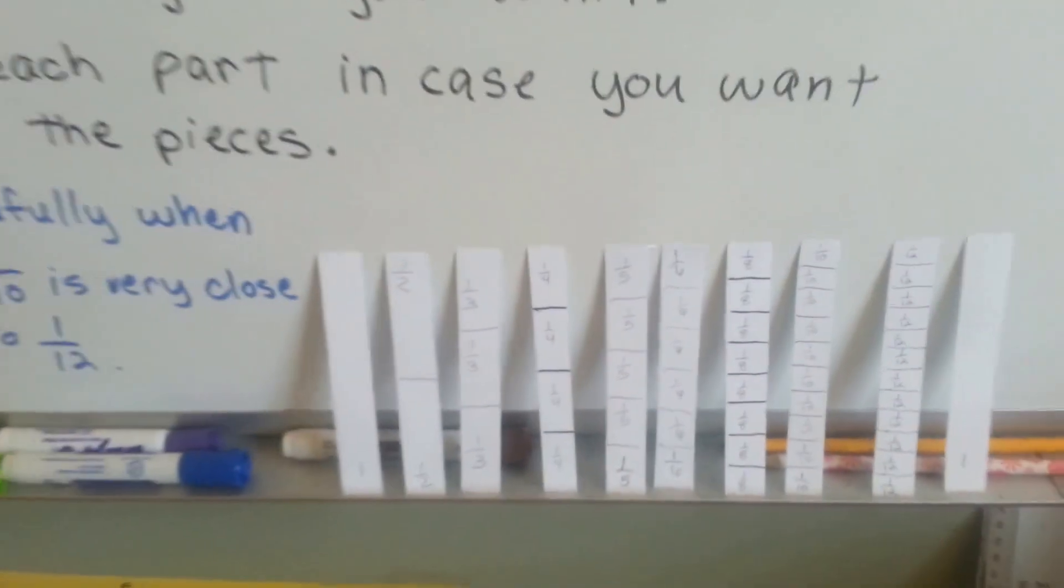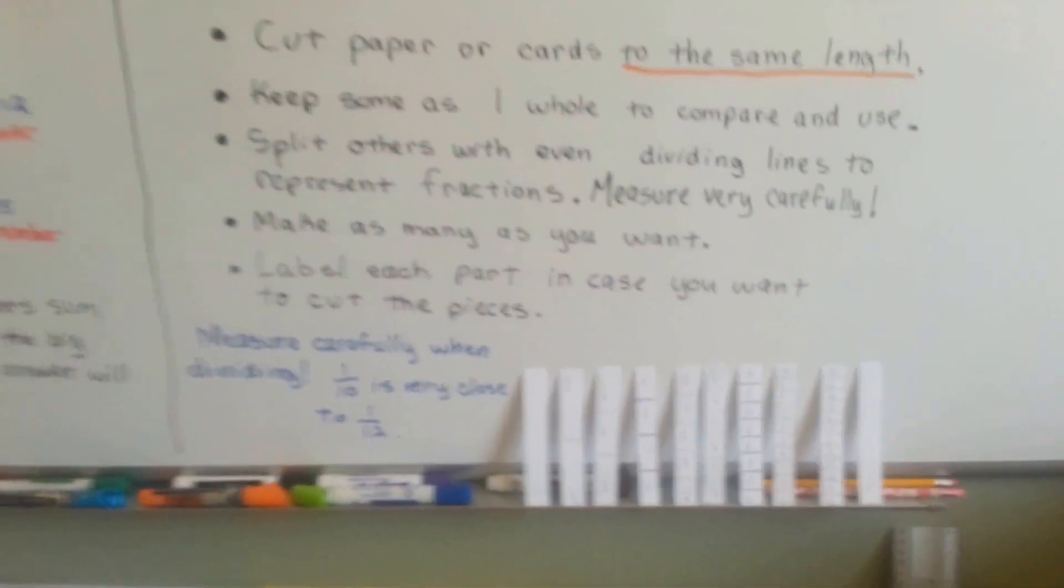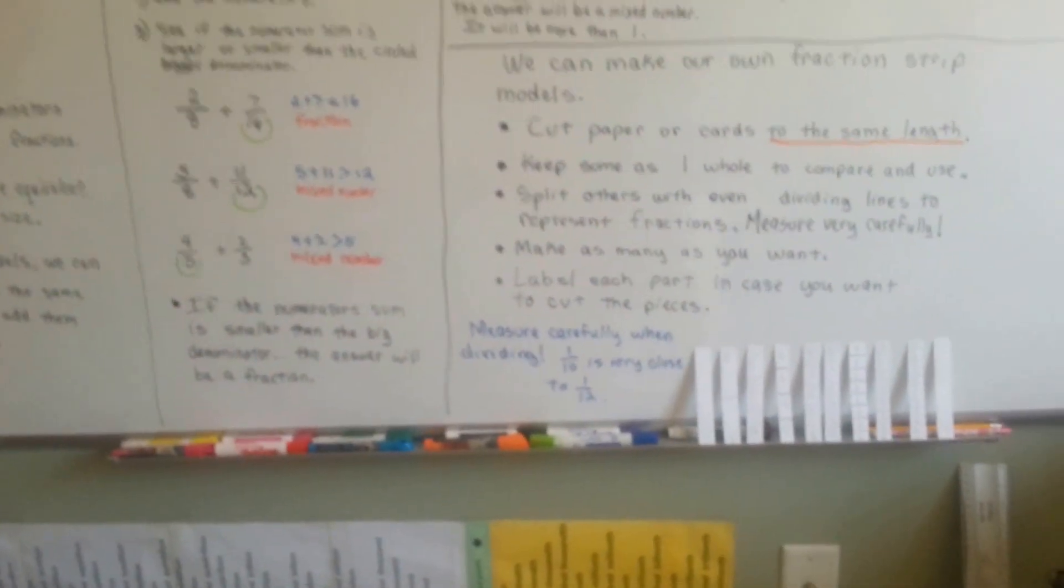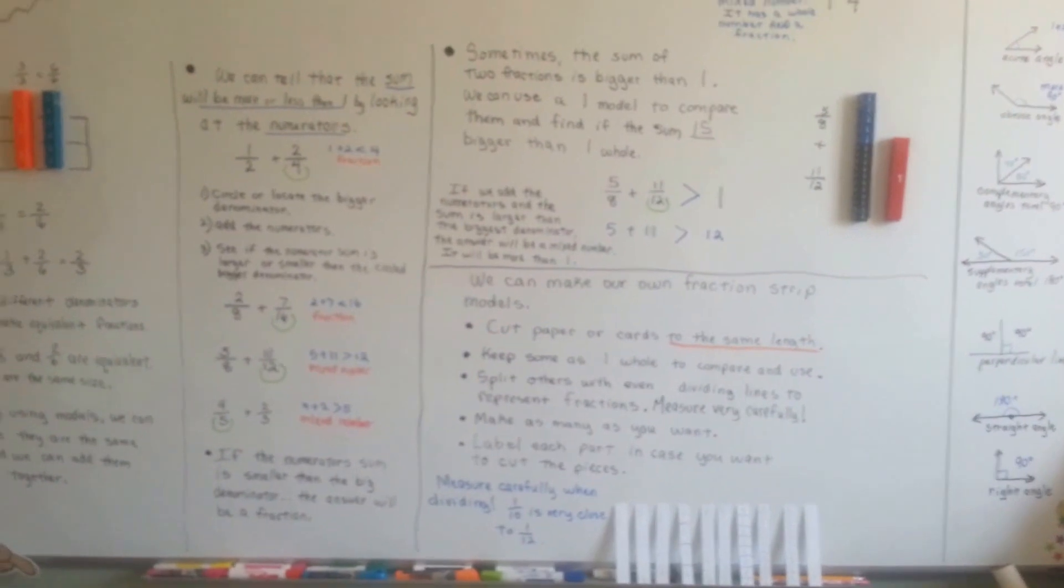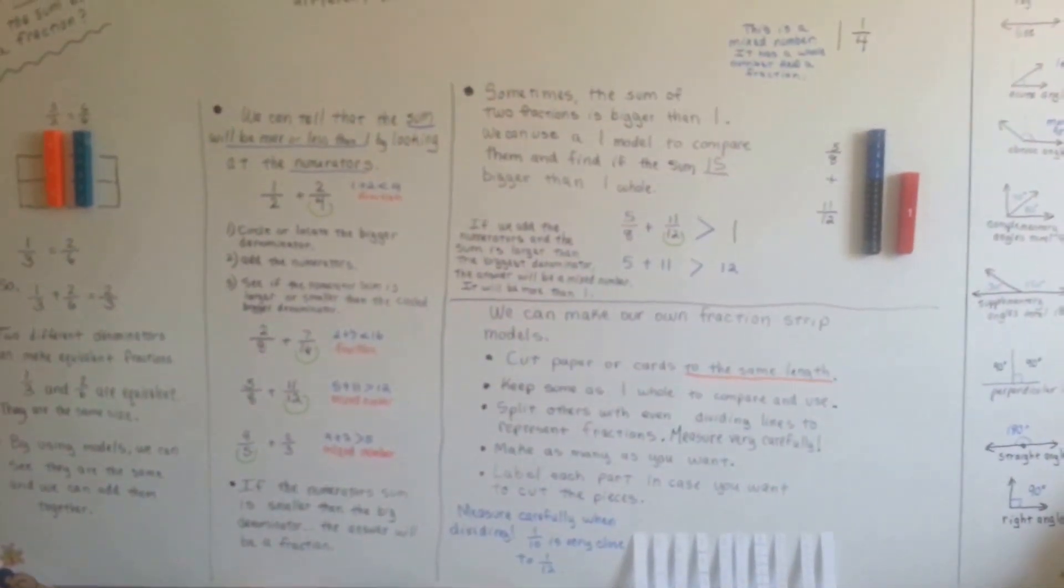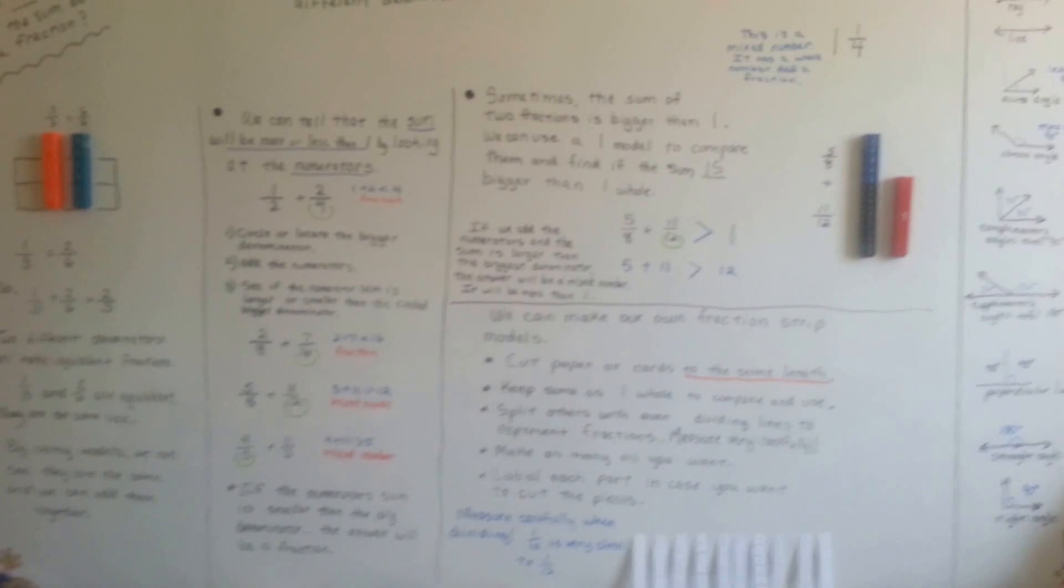If you do it really sloppy and crooked like this, it's going to be hard to tell when you put them with other ones if they're the right size or not. So, this is before we even add the fractions. We can know if the sum is going to be a fraction or a mixed number.